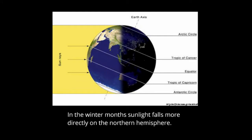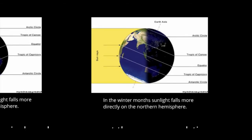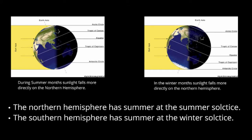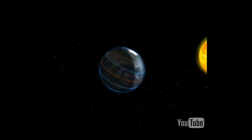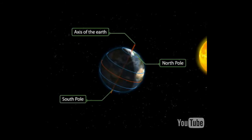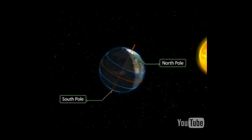In the winter, we are tilted away from the sun. The Arctic Circle gets no sun, the sun does not set on the Antarctic Circle, and the sun is directly overhead on the Tropic of Capricorn. So the northern hemisphere has summer during the summer solstice and the southern hemisphere has its summer at the winter solstice. The axis of the earth is an imaginary line linking the two poles, tilted at 23 and a half degrees during a revolution.